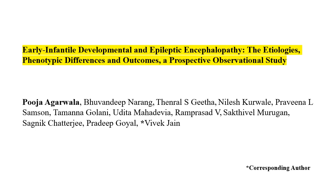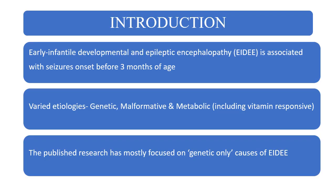In this study, we have looked at the etiologies, phenotypic differences, and outcomes. Early Infantile Developmental and Epileptic Encephalopathy is a severe form of epilepsy where we see seizure onset before 3 months of age. It can be due to various etiologies, the most common being genetic, malformative, and metabolic causes. Various literature has been done on this topic, but it has focused mainly on genetic-only causes. Not much literature is known about malformative and metabolic causes.